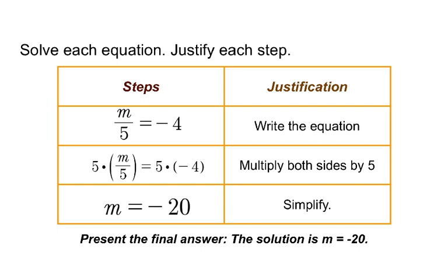Well, now we can take and simplify here on the left side that 5 divides into itself once. And so we just have one copy of m here. And then on the right-hand side, 5 times negative 4. It's a positive times a negative. So it is a negative product. And then 5 times 4 is 20 to make this our answer for m as we present our final answer.